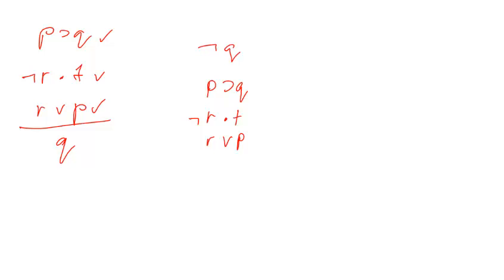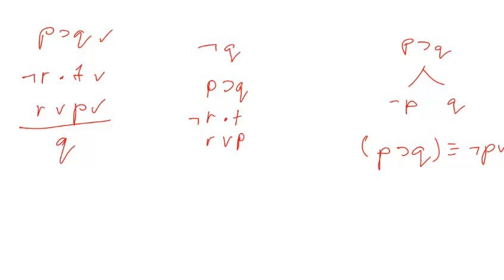Let's take them in order. First we'll start with if P then Q. The tree rule for if P then Q is to split the path into not-P on one side and Q on the other. This is because P then Q is equivalent to not-P or Q, and the tree rule for a disjunction is just to split the paths. Currently we have only one path beginning with not-Q, if P then Q, not-R and T, R or P. So we split the path in two: not-P and Q.